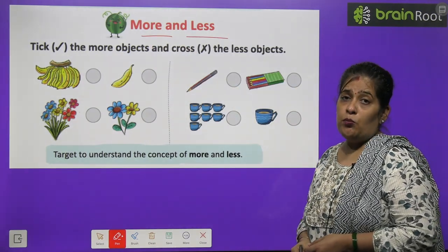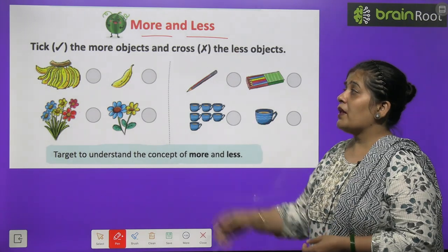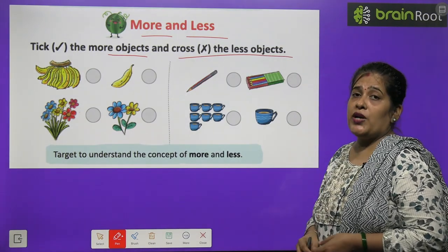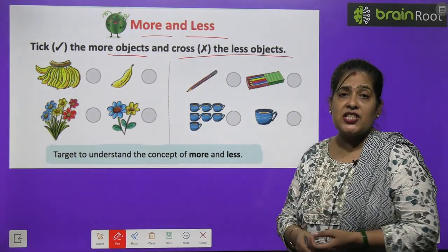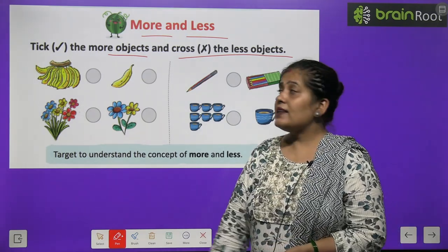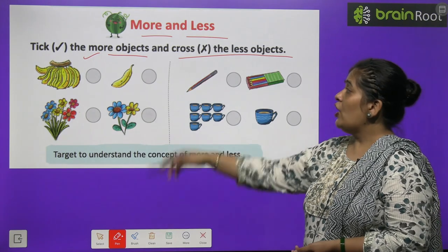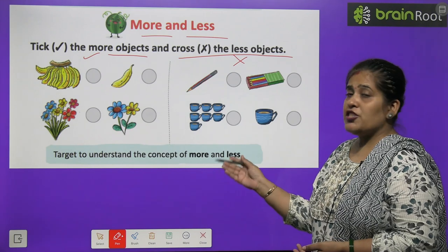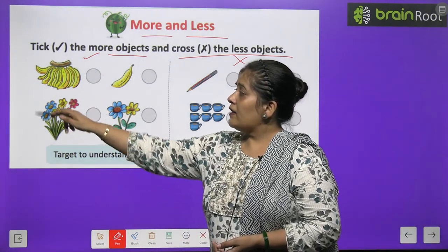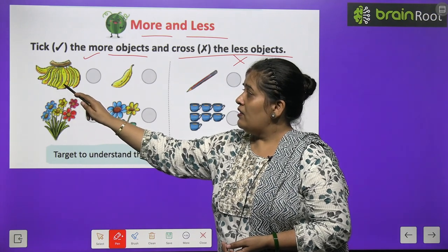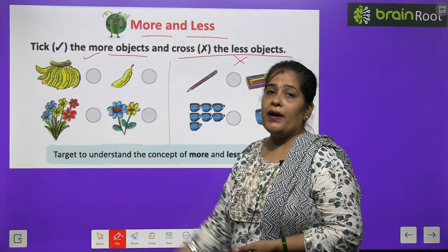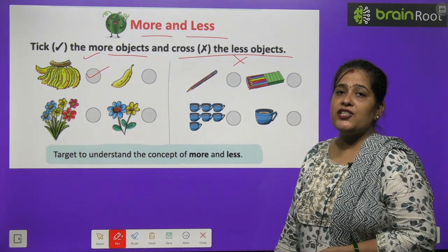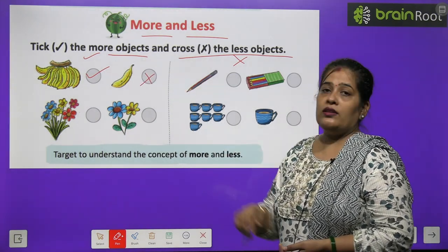More and less. More کا مطلب ہوتا ہے زیادہ اور less کا مطلب ہوتا ہے کم. Tick right the more object and cross the less object. یہاں پہ کچھ objects کی پچھر دی گئی ہے — جو objects زیادہ ہیں ان پر tick کا نشان لگائیں اور جو less ہیں ان پر cross لگائیں. How many bananas are there? 1, 2, 3, 4, 5, 6, 7, 8 — there are 8 bananas and here only 1, so we make a tick on 8 and cross on 1.